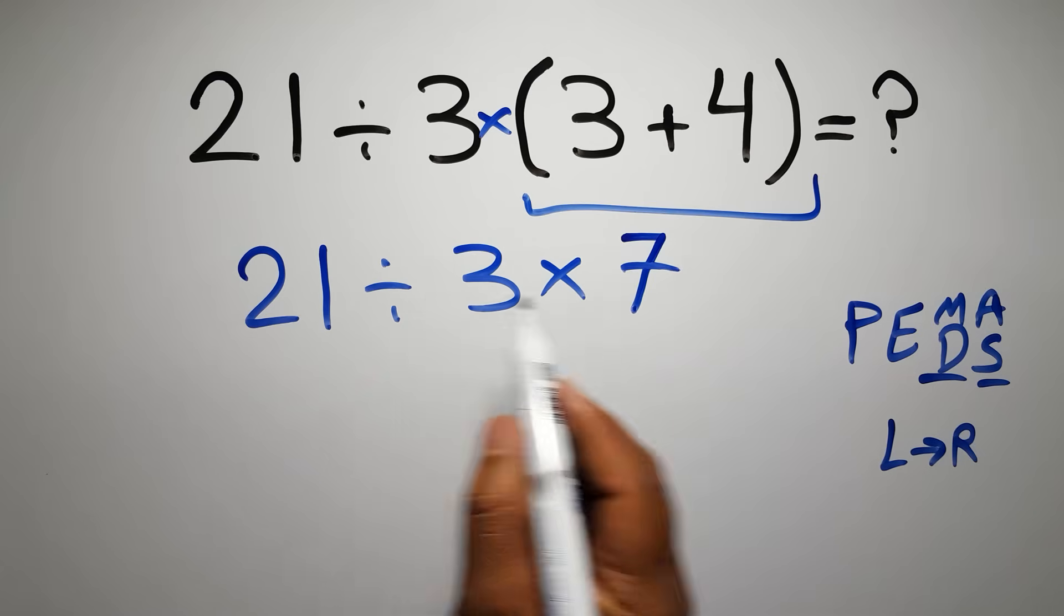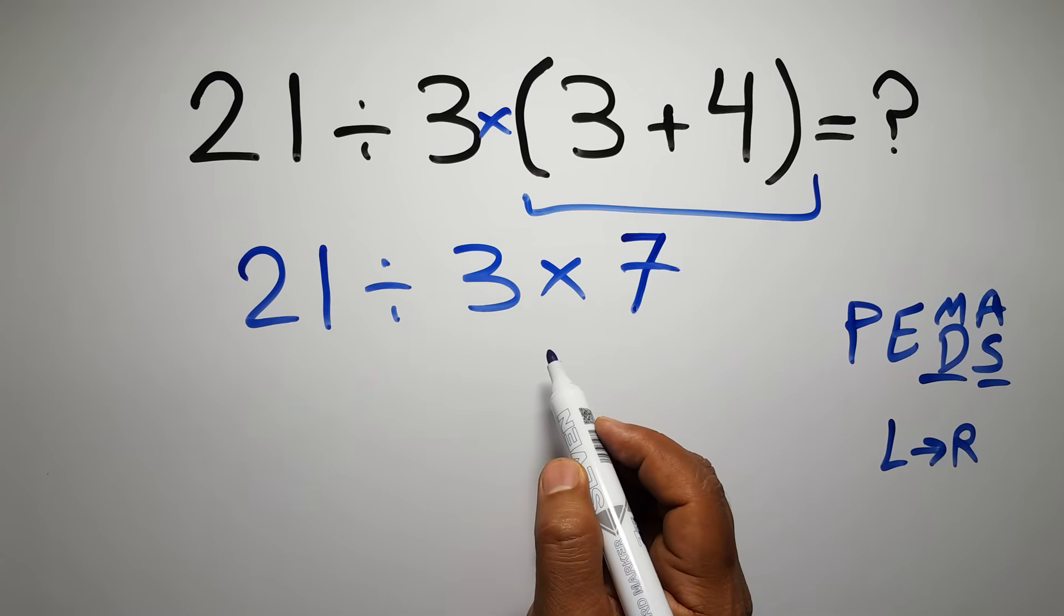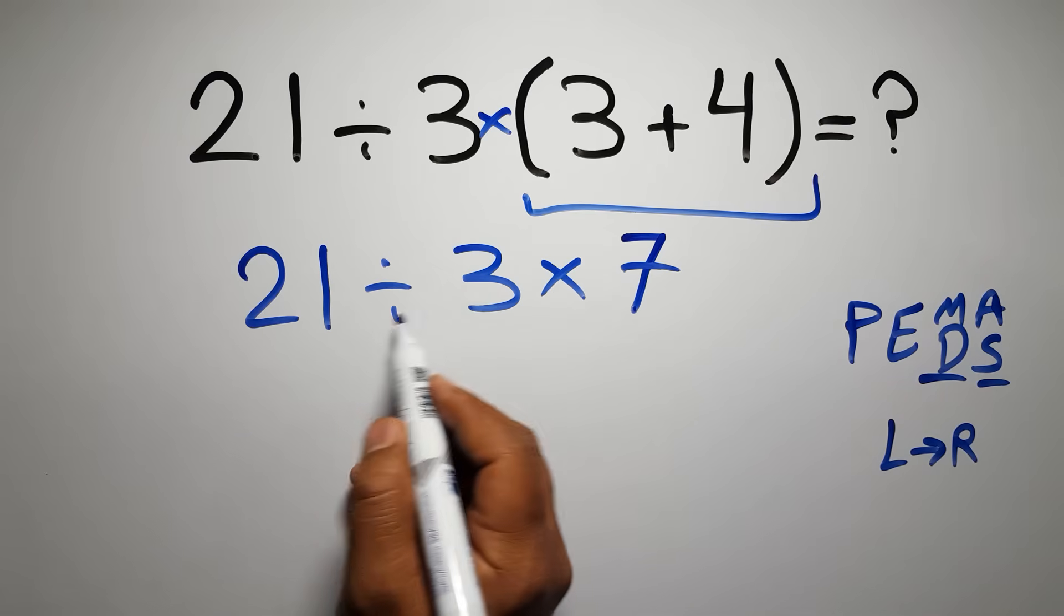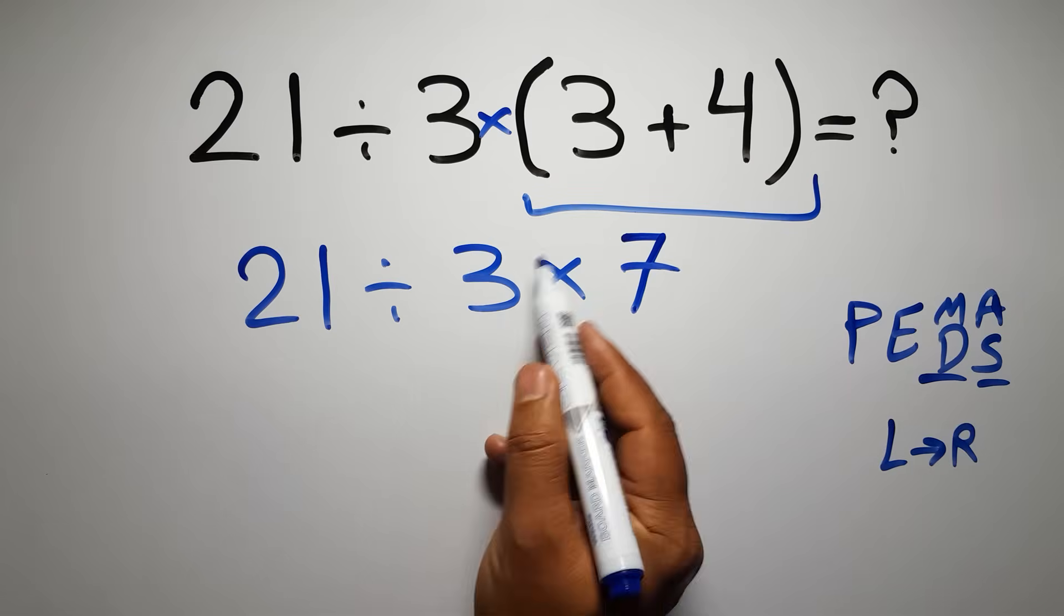Now, we have one division and one multiplication. As I said, multiplication and division have equal priority, and we have to work from left to right. So here, first we have to do this division, then this multiplication.